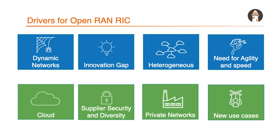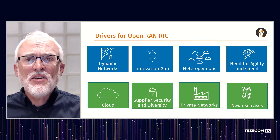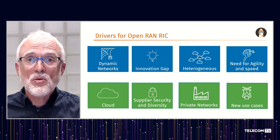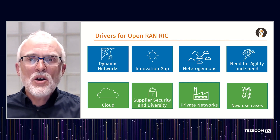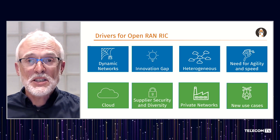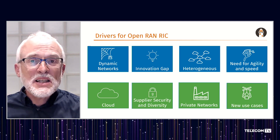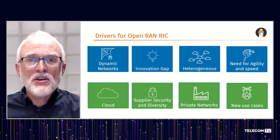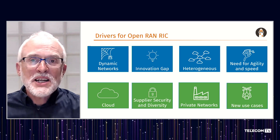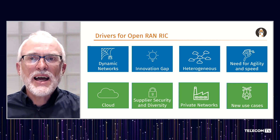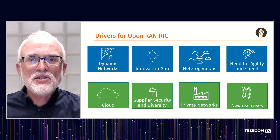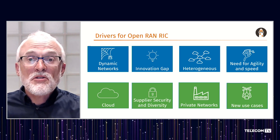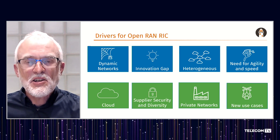So let's look at the drivers for RIC. There is an increasing need for and ability to have dynamic networks. The innovation gap between what is possible and what could be delivered with today's ways of working needs to be bridged. The RAN is an increasingly heterogeneous infrastructure where one vendor, one approach, fits all, constrains innovation and automation. Operator agility and speed is limited by traditional equipment vendor release cycles. Cloud changes everything, particularly in allowing massive scaling of AI analysis to drive optimized networks. Geopolitics has highlighted the need for increased supplier security and diversity. Private networks are a completely new market for 5G, but with very different needs and ecosystems from traditional RAN.